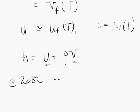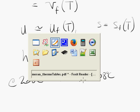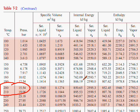At 208 degrees C, our U is approximately Uf at 208 degrees C. We're going to need to interpolate to find that. Where are we? We are interpolating between these two values here.